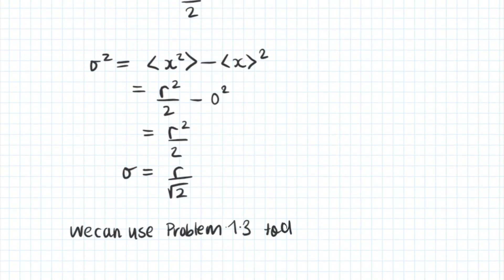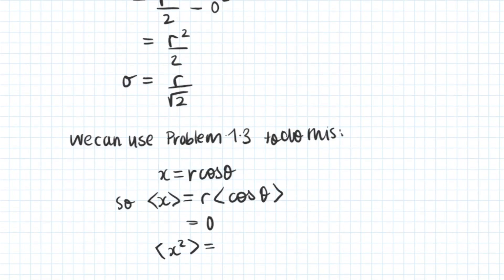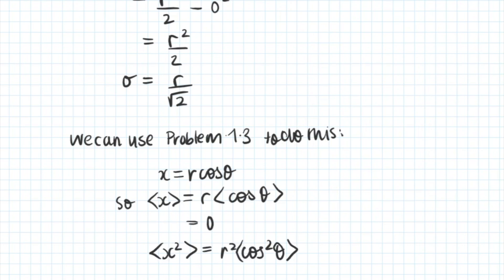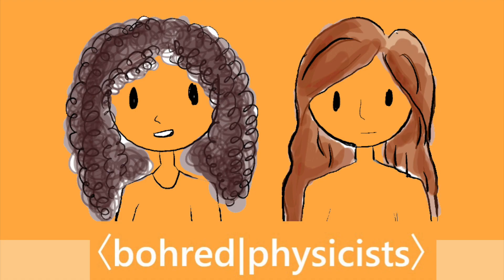The final part of b asks how we can use part c of problem 1.3 to obtain these results. Since x equals r cos theta, the expectation value of x equals the expectation value of r cos theta, which is 0 from problem 1.3. The same reasoning applies to the expectation value of x squared using the result for cos squared theta. Thank you so much — Bored Physicist!